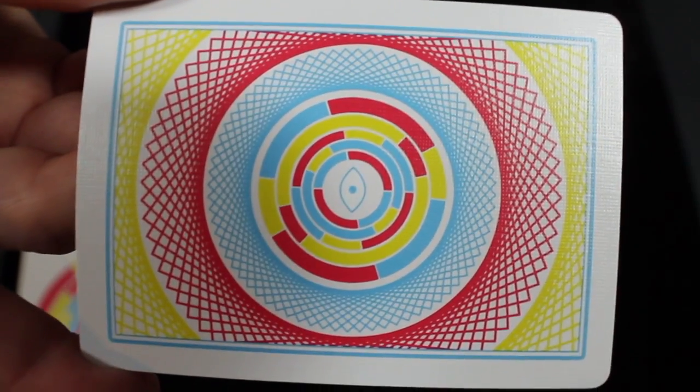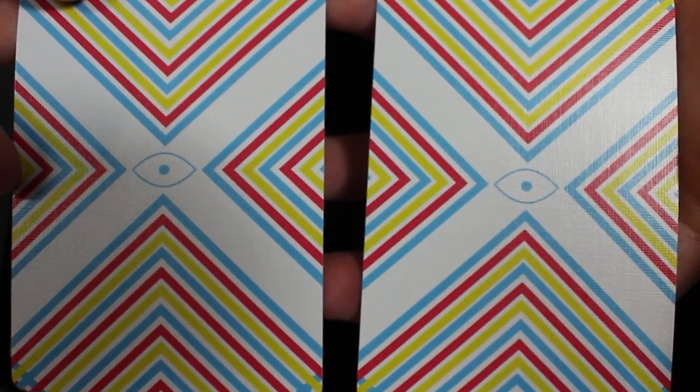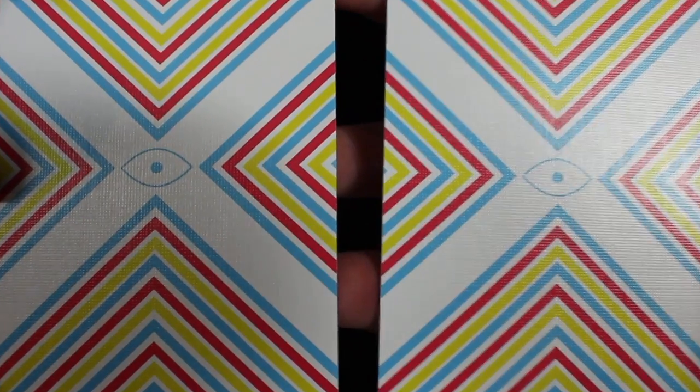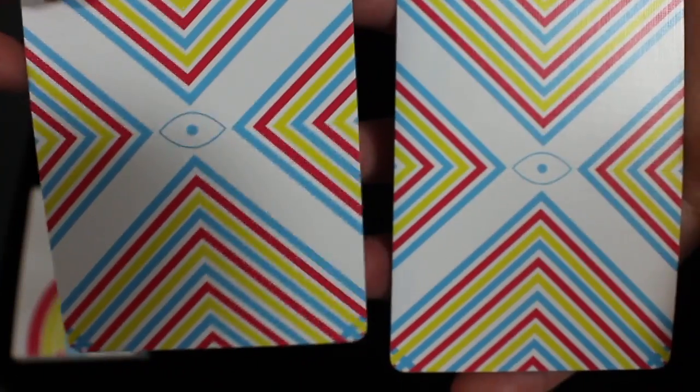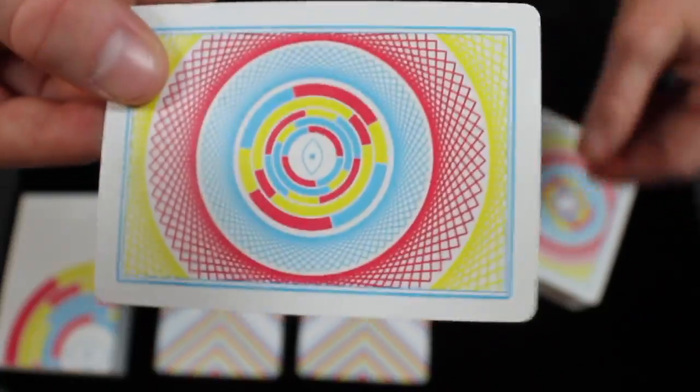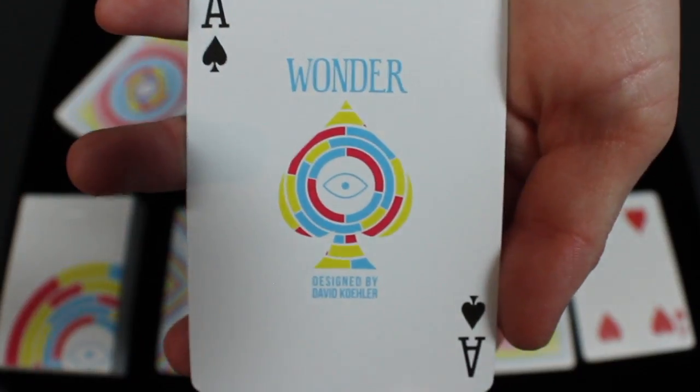This deck comes with two specially designed face cards with four-sided chevron design creating a giant X with an eye symbol in the middle, kind of playing off the front of the deck and the tuck box itself. Even though these aren't labeled jokers, these are the jokers of the deck. It comes with a double backer and with an extra four of hearts.